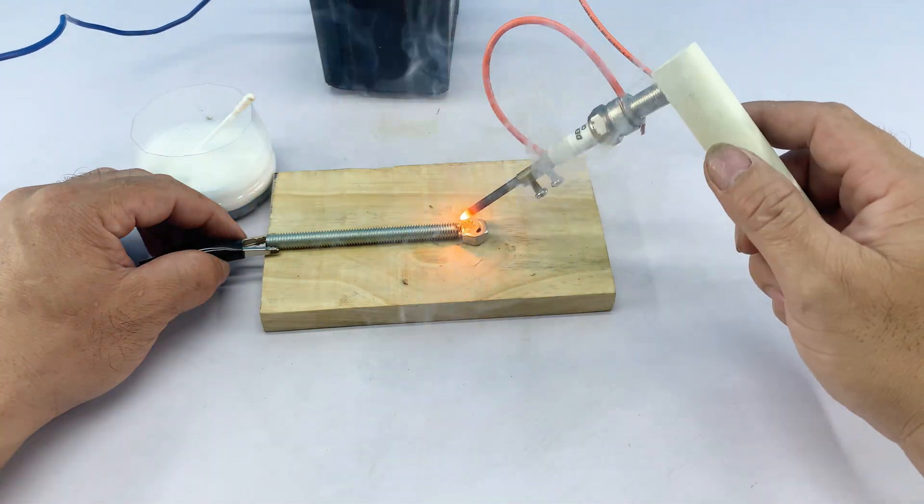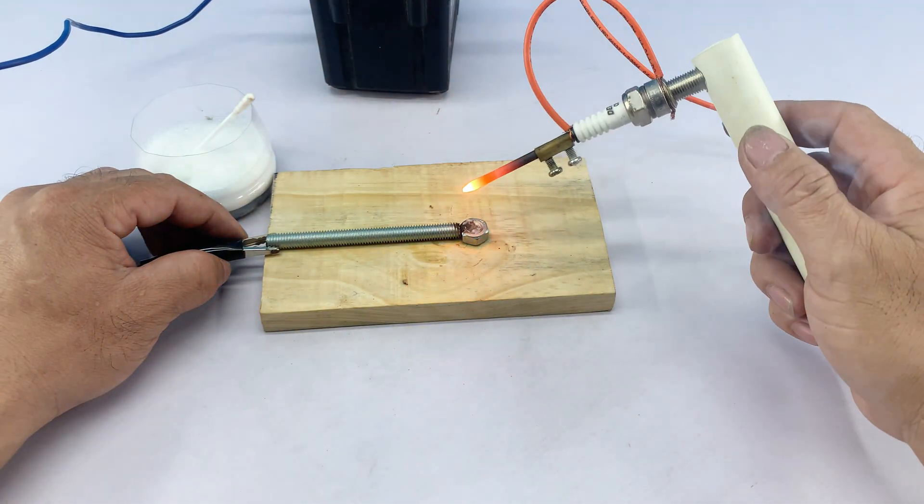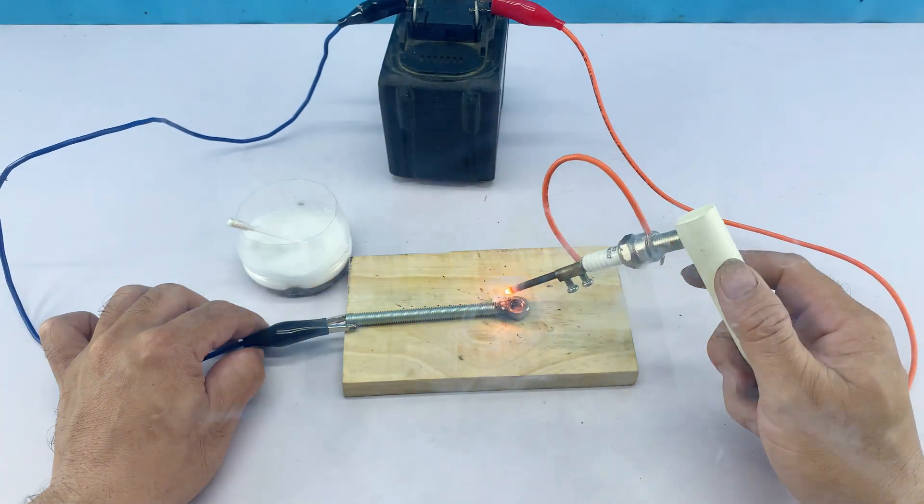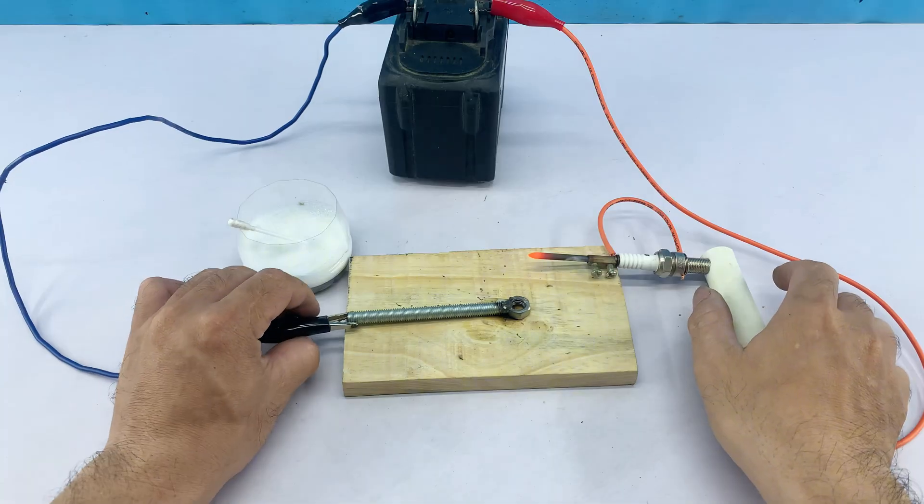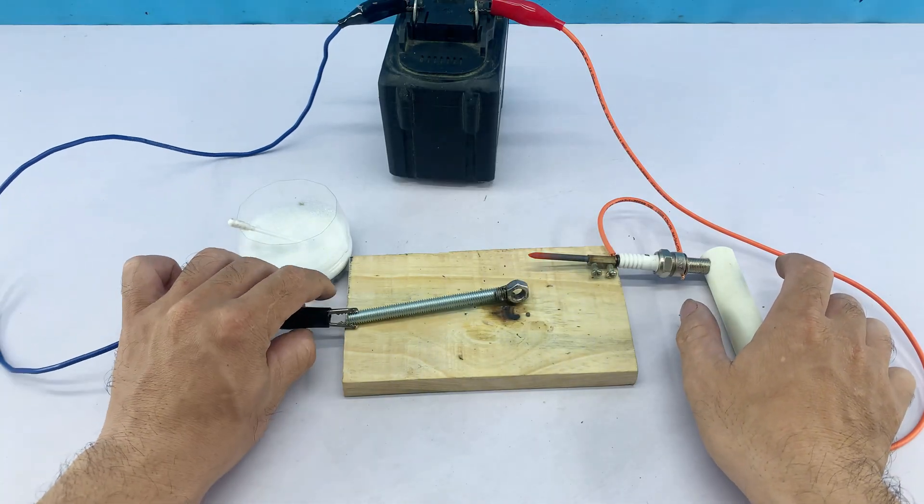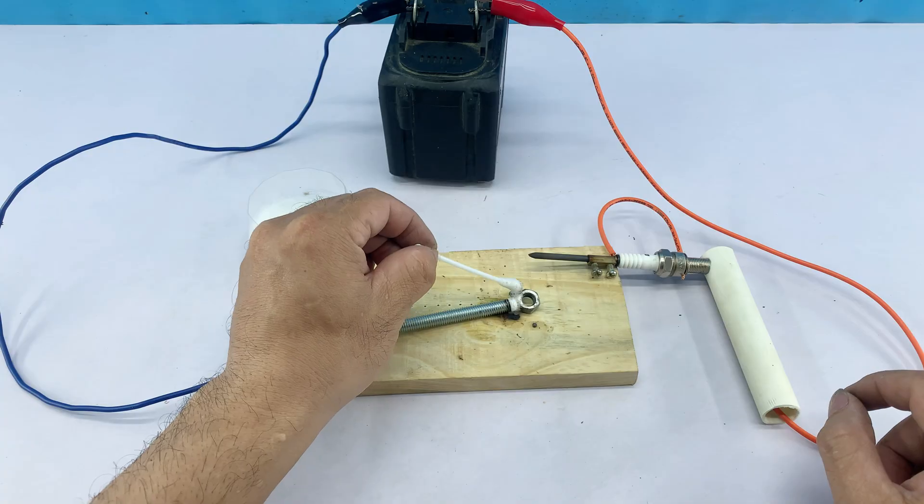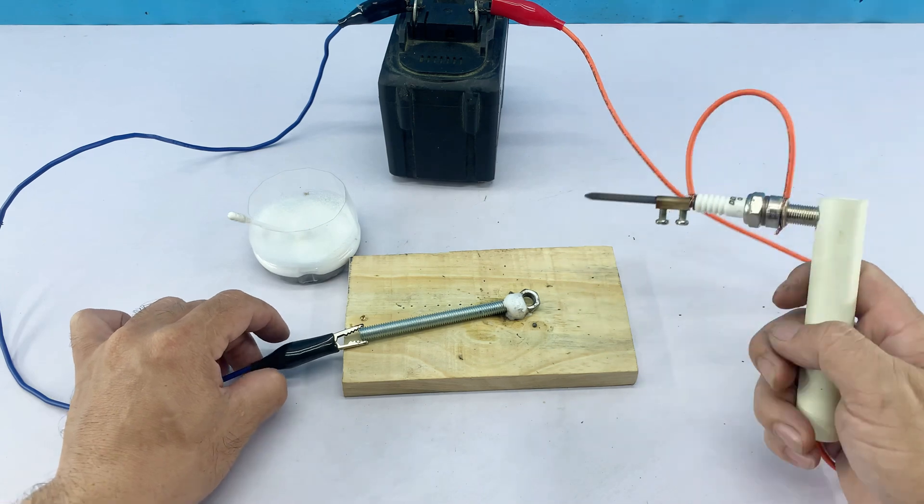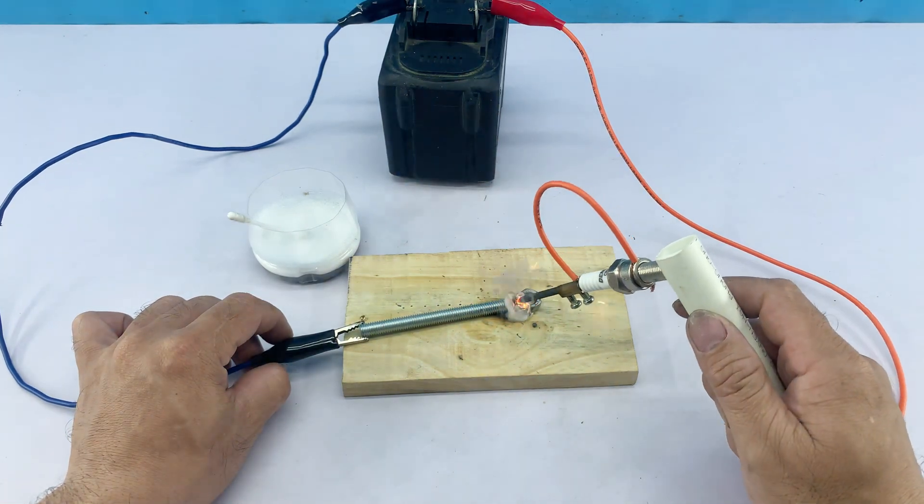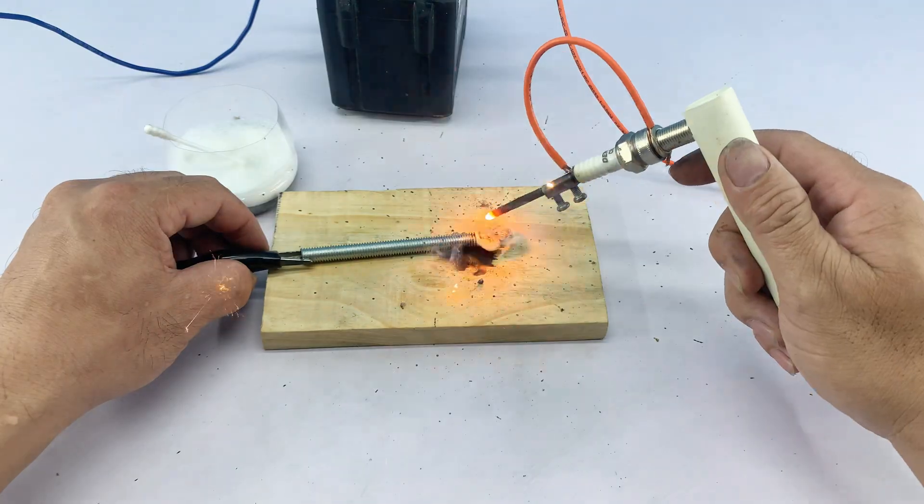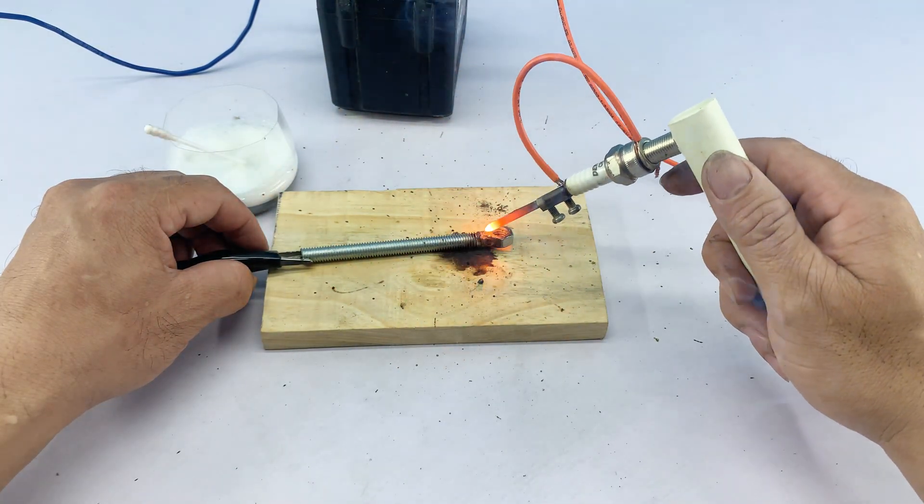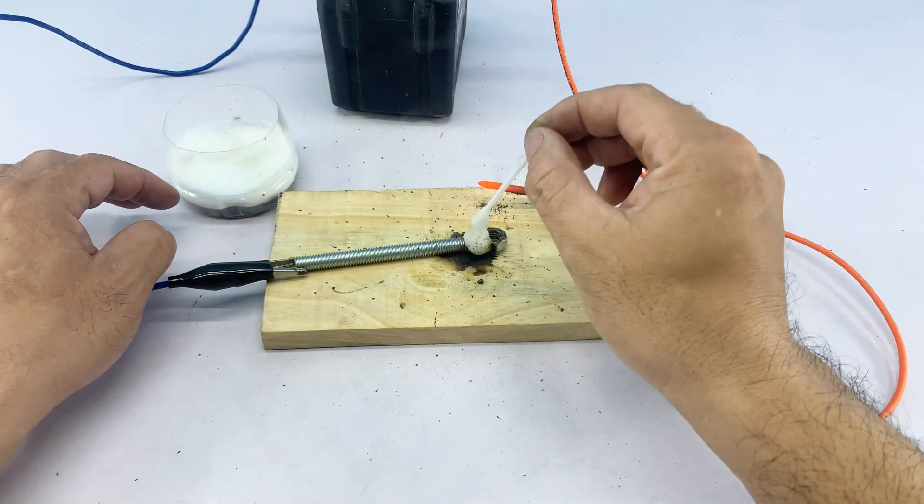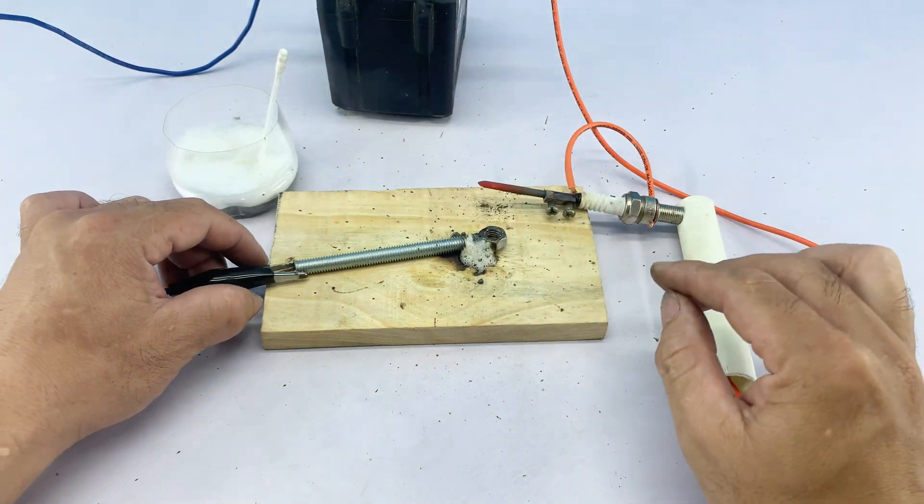As the current flows, the metal blades heat up intensely, glowing red hot. This creates a powerful, precision hot cutting tool. Our DIY soldering iron works perfectly. It's working just as it should, ready to tackle any soldering job. As I apply power, you can see it heating up and glowing brightly, capable of performing small-scale welding tasks. It glows bright orange, demonstrating its capability to heat metal effectively for various applications, like marking or even simple welding.